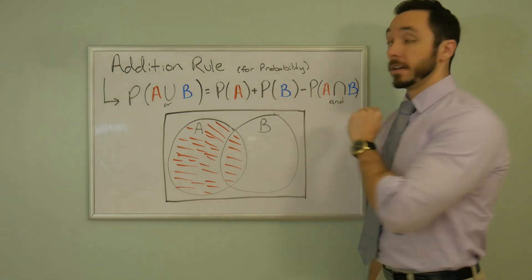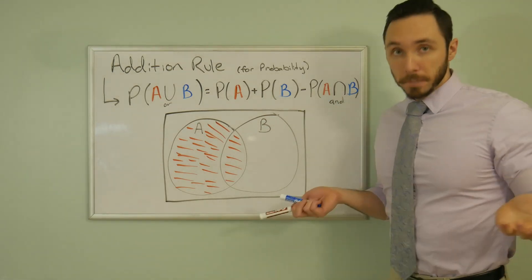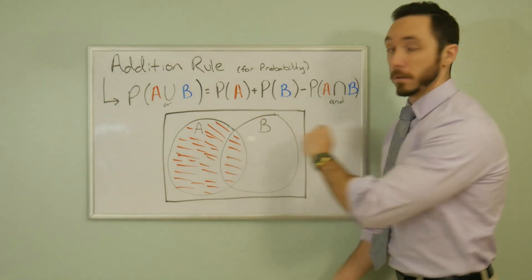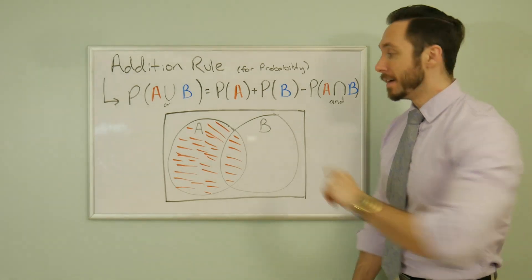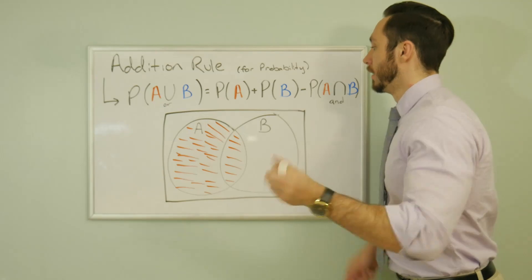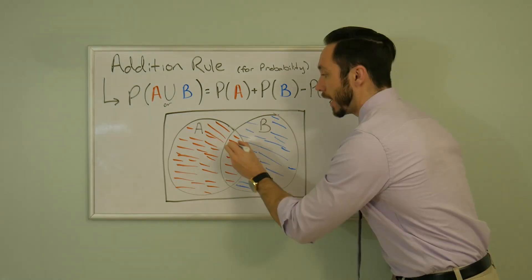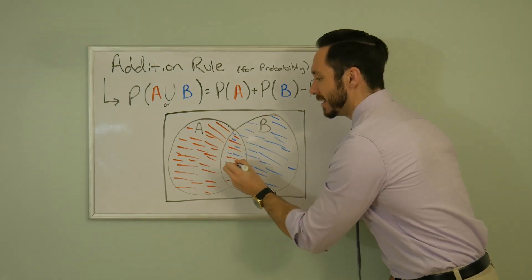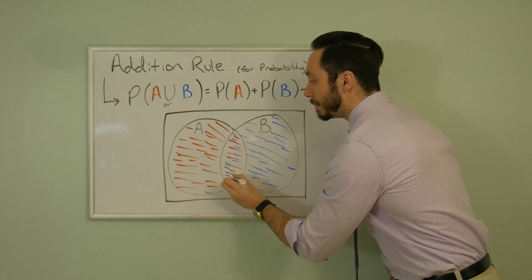Likewise, for probability of B, that just means you like bananas, and that's that circle B. Everything in B must be shaded in, highlighted. That includes this little sliver inside, this A and B section.